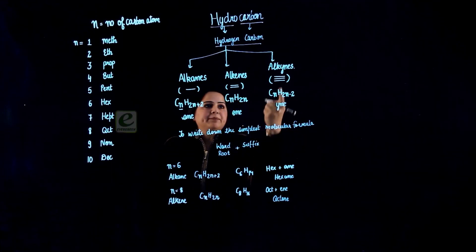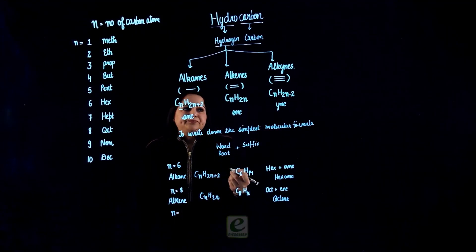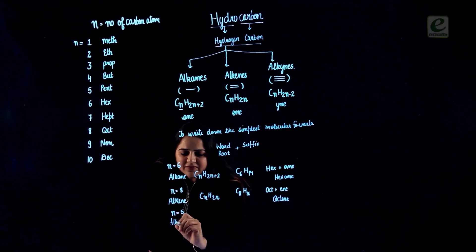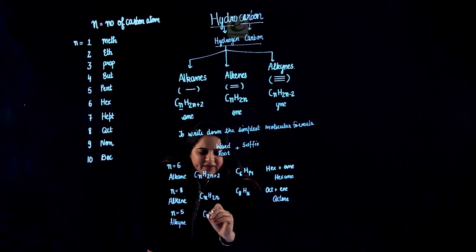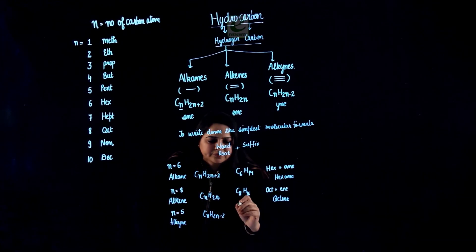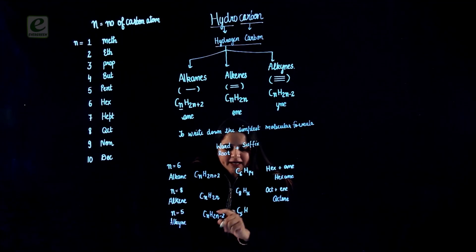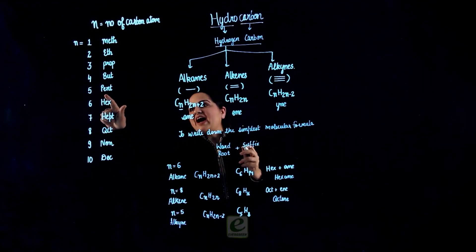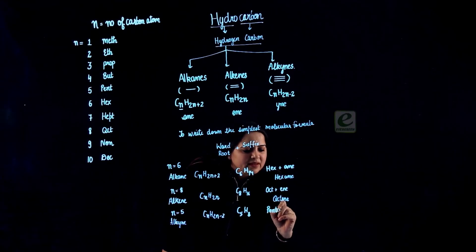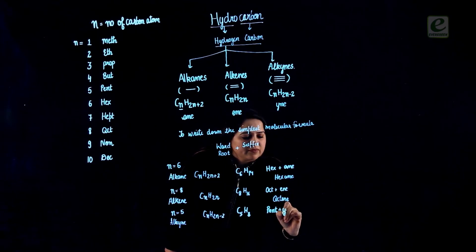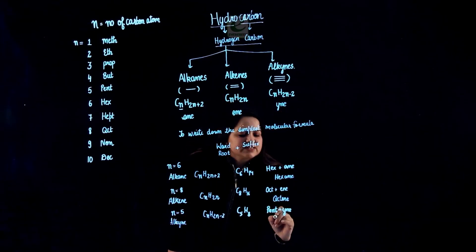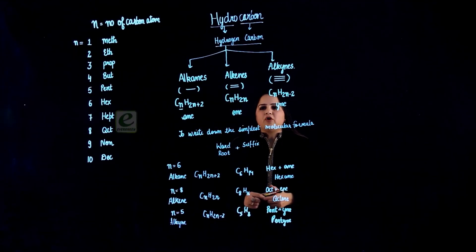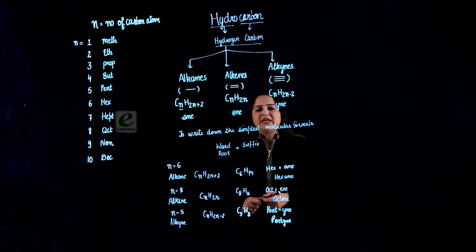Let's take another example from alkyne. Consider we have 5 carbon atoms in alkyne. We have the formula of alkyne as CnH2n-2. This is C5. H will be 2 times 5 is 10, minus 2 is 8. C5H8. From 5, we know this is pent. And from alkyne, we get the suffix -yne. So ultimately, it results in the formation of pentyne. This is how the molecular formula and molecular name can be derived.